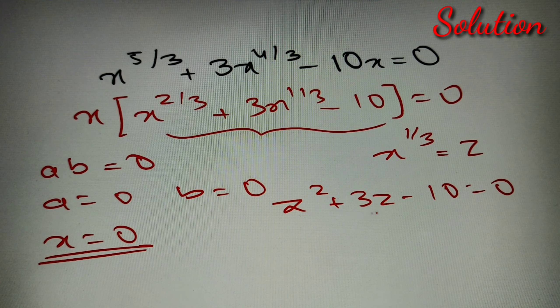Now we can easily solve it by factoring z² + 3z - 10, and we'll get two values of z, then we'll substitute them as x^(1/3) and get those values.